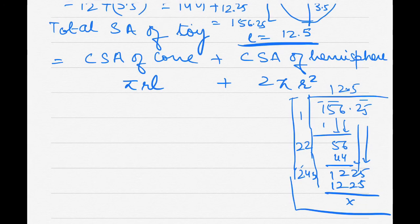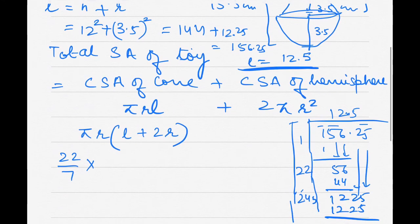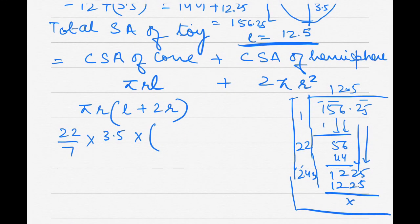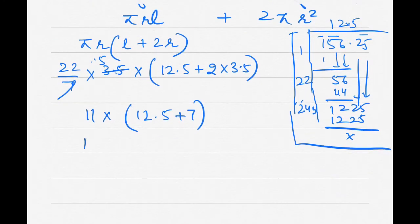In the formula πrl + 2πr squared, taking πr common leaves (l + 2r). So we have (22/7) × 3.5 × (12.5 + 2 × 3.5). Radius 3.5 divided by 7 gives 0.5, so we have 11 × (12.5 + 7), which is 11 × 19.5.